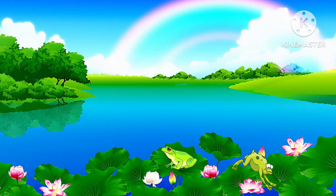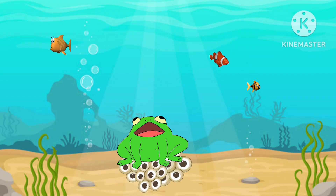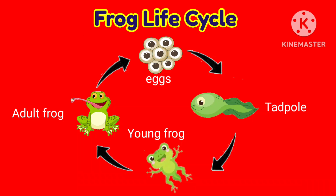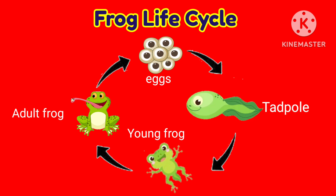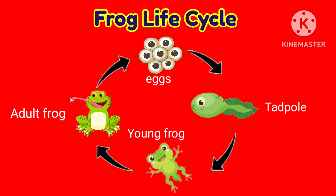The young frog will grow for about two to four years to become an adult. The adult frogs then lay their eggs to begin the cycle again. Now let's revise what we've studied: the first stage is the egg stage, then the eggs hatch into tadpoles, the tadpole grows into a young frog, then into an adult frog, and the cycle continues.